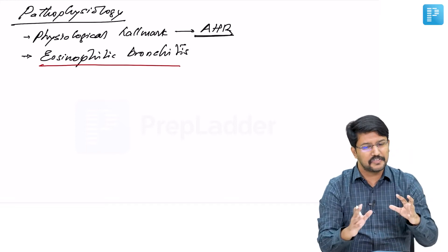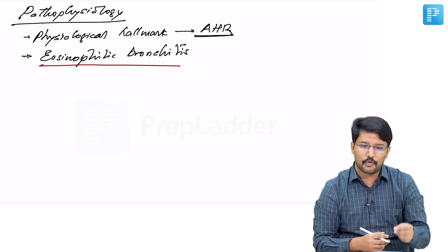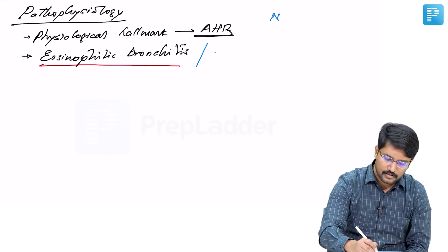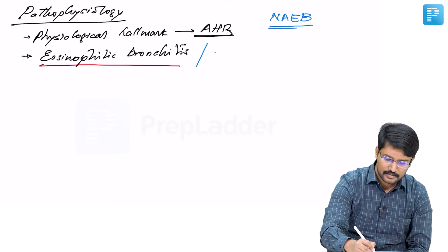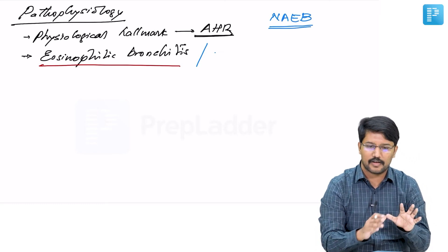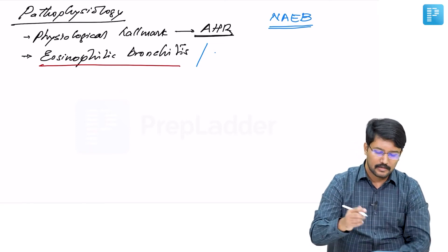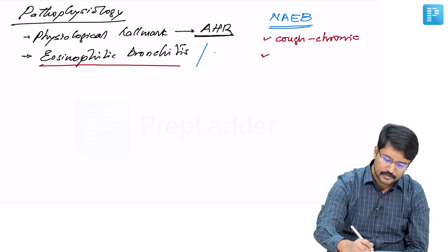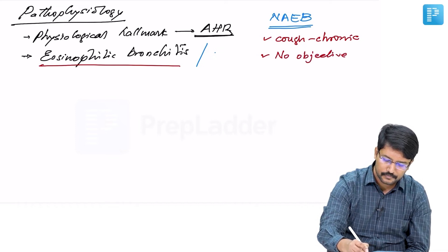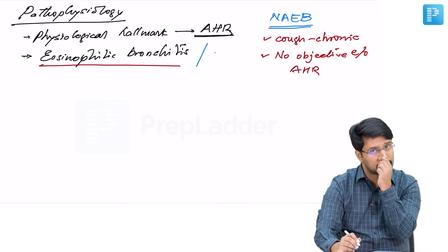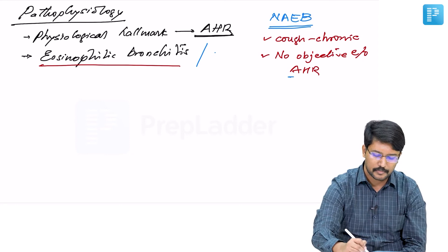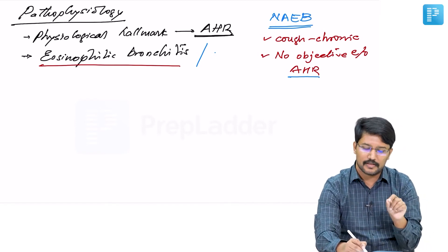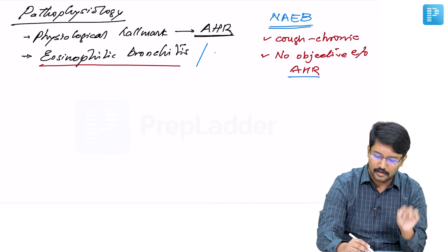There is another entity called eosinophilic bronchitis, and to differentiate it from asthmatic eosinophilic bronchitis, it is known as non-asthmatic eosinophilic bronchitis (NAEB). The main difference is that patients with NAEB present with cough, often chronic, but there is no objective evidence of airway hyperresponsiveness. We demonstrate airway hyperresponsiveness through bronchodilator reversibility.